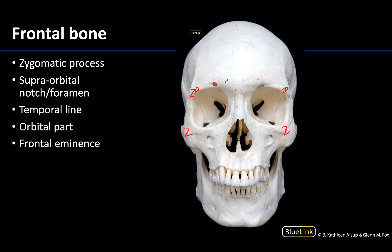Next, let's identify the temporal lines. Go back to the zygomatic processes of the frontal bone and follow this line posteriorly, heading back towards the parietal bones. These are the temporal lines, and this line is formed by the attachment of the temporalis muscle, with temporalis fascia attaching here as well. Looking into the orbital region, you can see a fairly large orbital part of the frontal bone. The frontal bone is actually forming the roof of the orbit, so that roof of the orbit within the frontal bone is referred to as the orbital part.